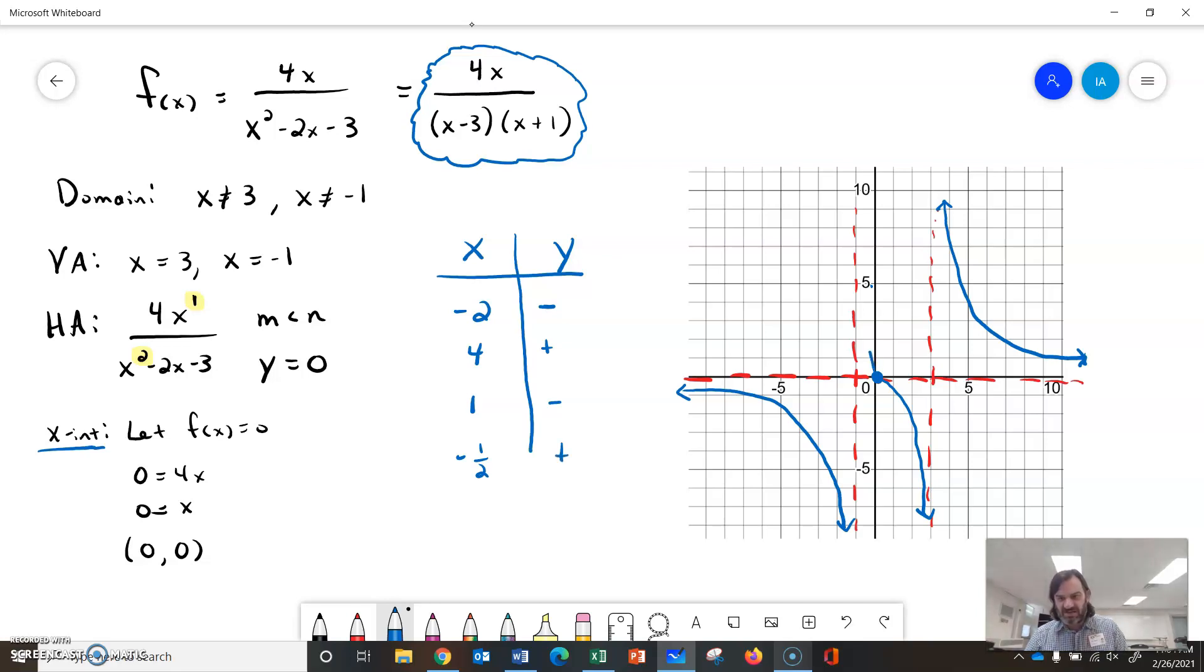Putting all that together, we get a graph that looks like what I have here. You could actually calculate these numbers instead of just determining positive or negative, but since we know we have to be on one side of the x-axis in each region, I'm just doing something general. This gives us a good rough graph. Thank you.